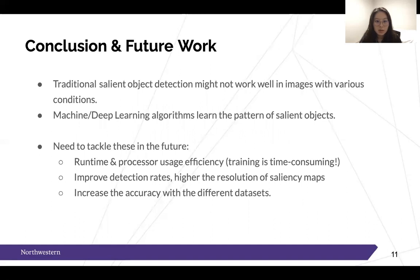The main takeaways are that traditional salient object detection may not work well for complex or non-clean images, so the methods introduced today are mainly based on learning algorithms like neural networks. The learned representation of different objects helps salient image detection and segmentation. For future work, researchers need to make processing and runtime more efficient, since learning algorithms are time consuming. Improvements in detection rates and higher resolution saliency maps are also needed, as detected object edges in saliency maps can be blurry. Using larger and more diverse datasets to train the network is also recommended.